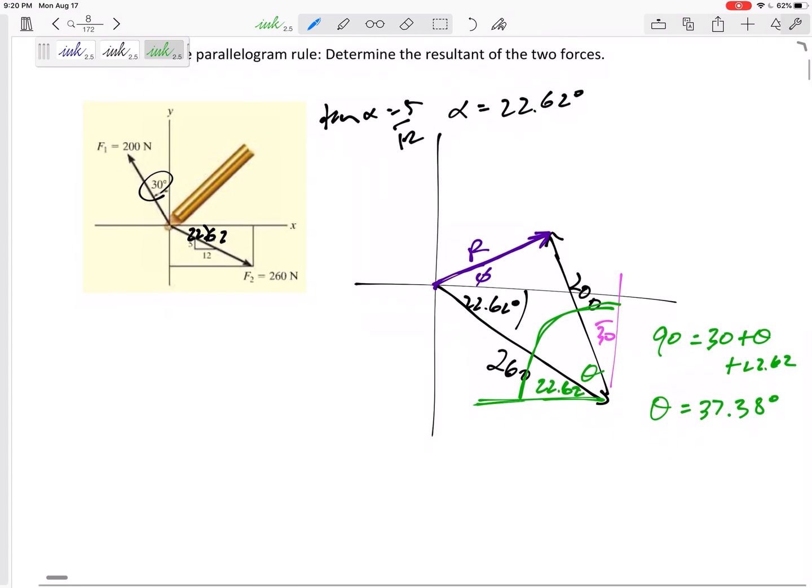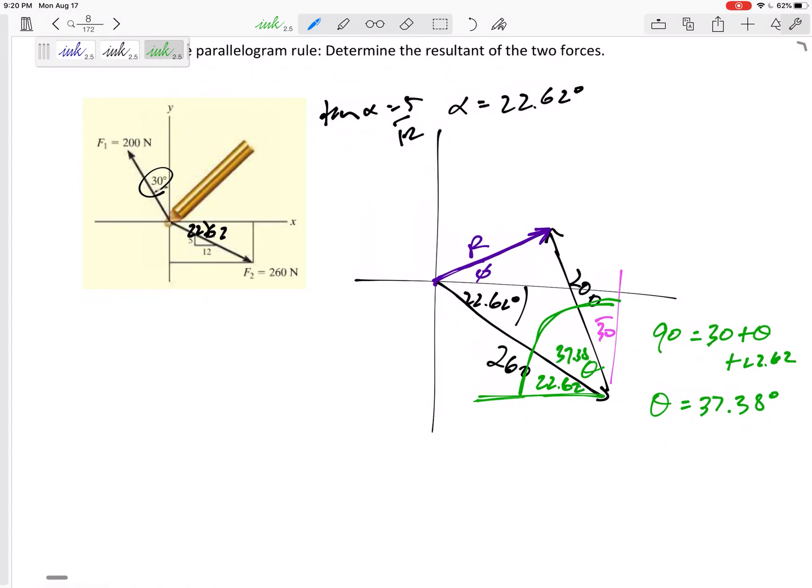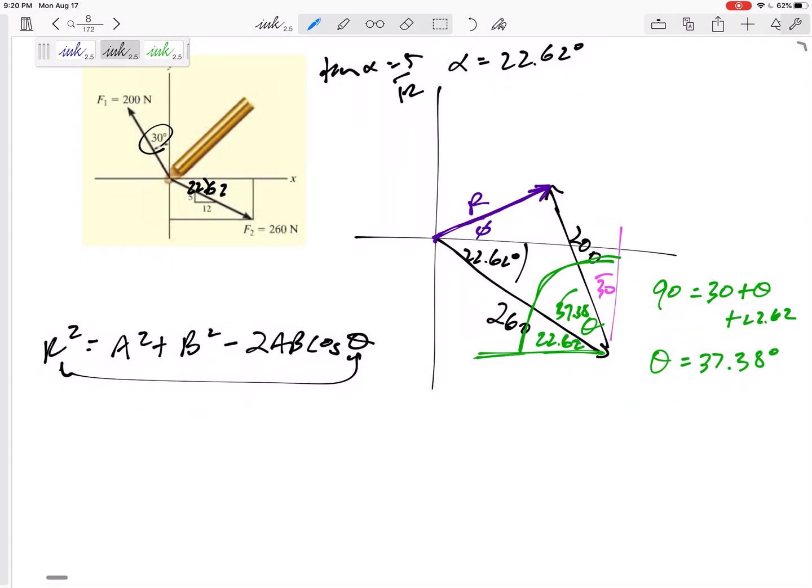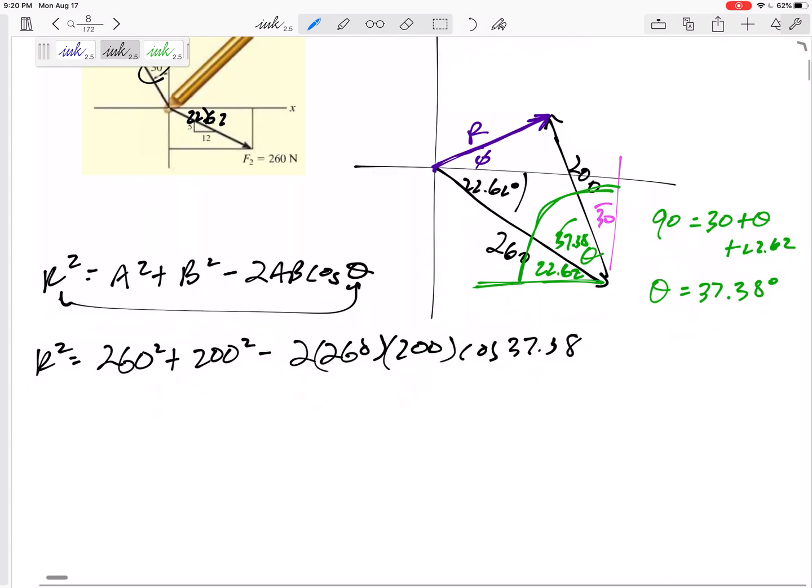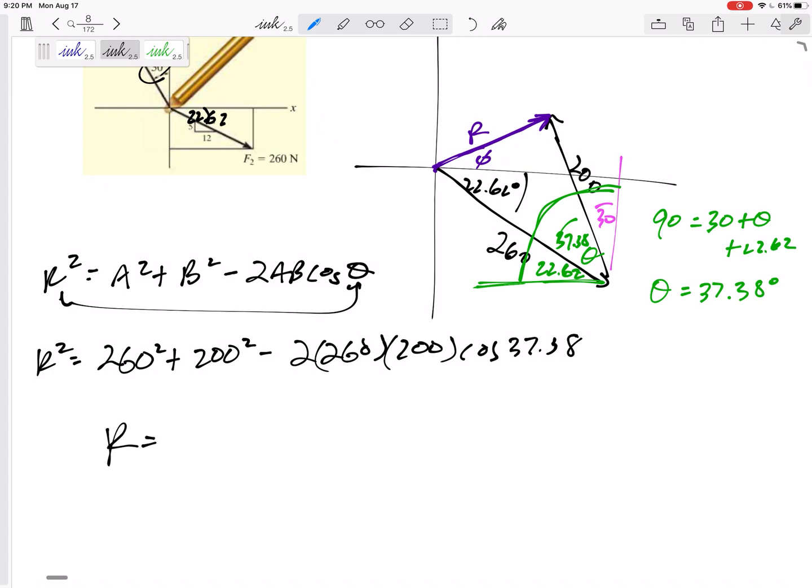All right, so now that I know that angle is 37.38, then I've got a side angle side. I can use law of cosines. r squared equals a squared plus b squared minus 2ab cosine theta. That theta is opposite that r. That's exactly what we've got here. r which I'm looking for equals 260 squared, 200 squared minus 2 times 260 times 200 cosine 37.38. I've got r equals 157.98 newtons.